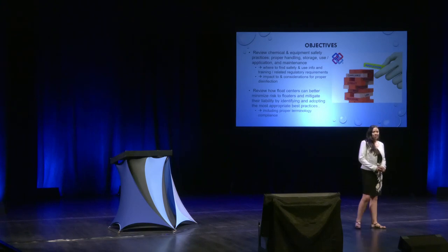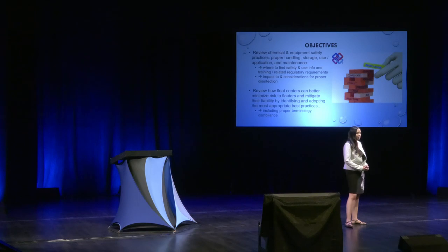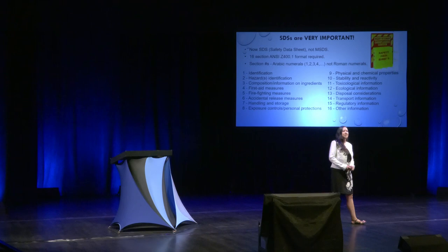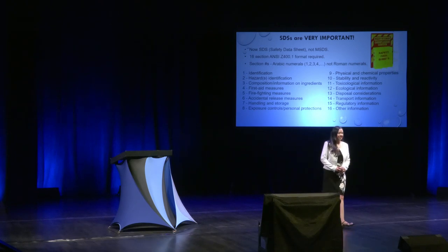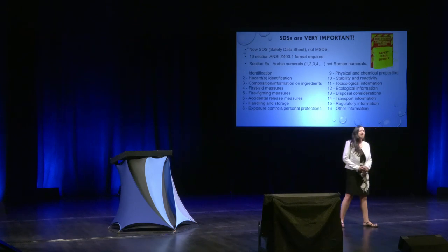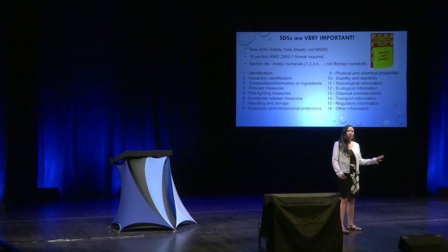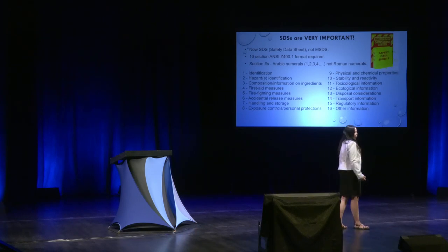So what is the first place that comes to mind for finding safety information on any given chemical? Your answer better have been safety data sheet. These are no longer called MSDSs — they're called SDSs now. There are 16 sections that are required formats, and I'm going to review just a few items that I want to highlight.